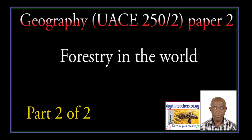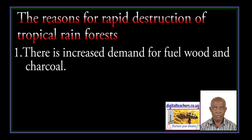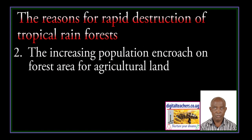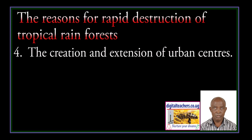The topic is Forestry in the World. The reasons for rapid destruction of tropical rainforests: there is increased demand for fuel wood and charcoal; the increasing population encroaches on forestry areas for agricultural land; mining and quarrying destroy forestry cover; and the creation and extension of urban centers.